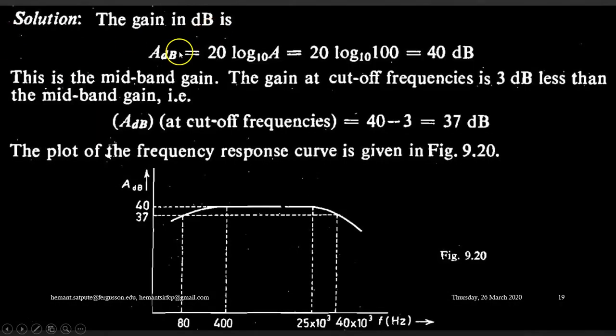The gain in dB is 20 log A to the base 10, that is 20 log of 100 to the base 10, which is 40 dB. This is mid-band gain. The gain at cutoff frequencies is 3 dB less than the mid-band gain, so the gain in dB at cutoff frequencies will be 40 minus 3, that is 37 dB.